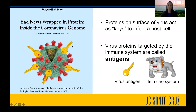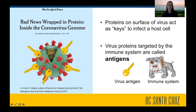Just as the proteins on the surface of the virus act as little keys to infect our cells, these are the same proteins that our immune system can recognize and target. When proteins are recognized by our immune system, those are called antigens. So the virus proteins on the surface of a virus are antigens, and our immune system can recognize those.